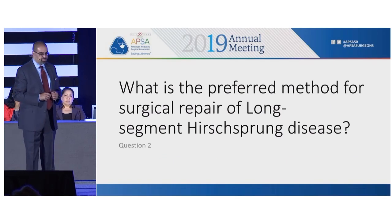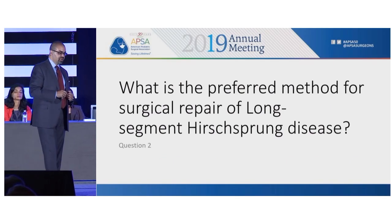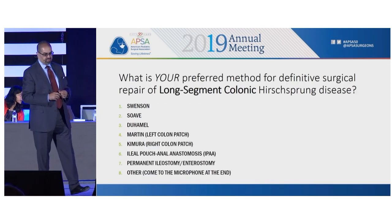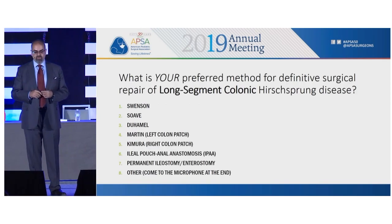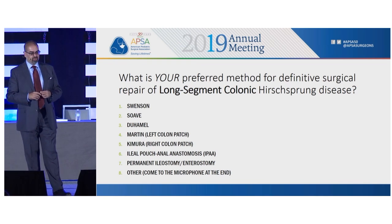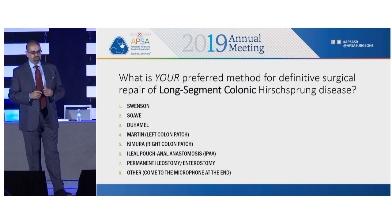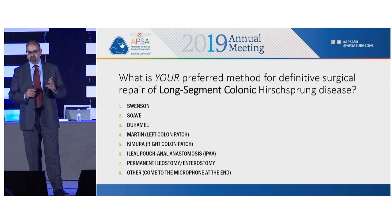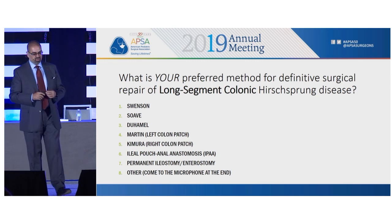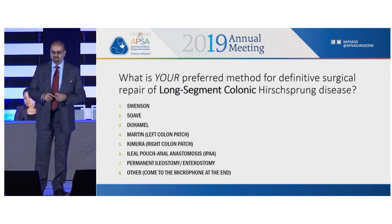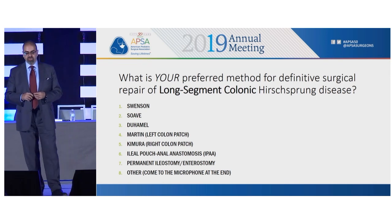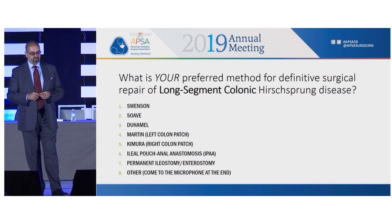The next question is what's the preferred method? We have the diagnosis — how do we fix these children? For the audience response question: what is your preferred method for surgical repair of long-segment colonic Hirschsprung disease? Is it the Swenson operation, the Soave, the Duhamel, Martin procedure, Kimura procedure, an ileal pouch-anal anastomosis, a permanent stoma, or something else?